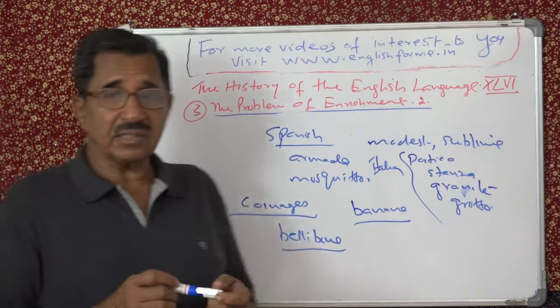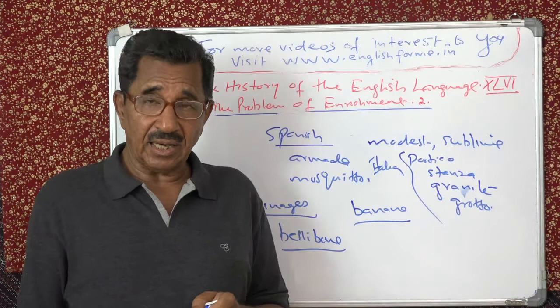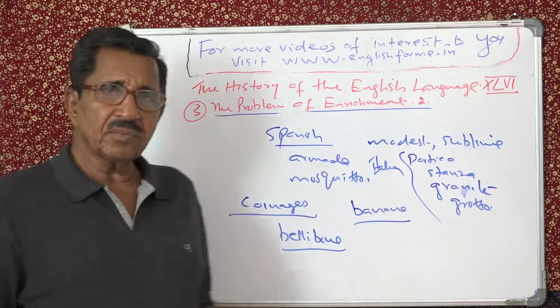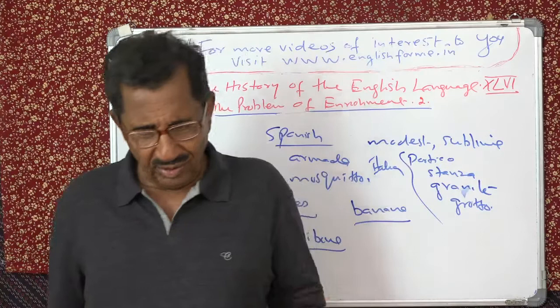La Belle Dame Sans Merci — the title of that poem by John Keats. Bell dame — beautiful lady. So bellibone means beautiful maid. But these days we don't use such kinds of coinages. Then we have derivations — woolfish, sunshiny — these are derived words.